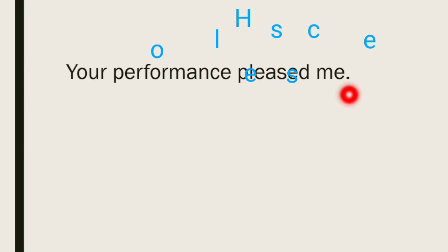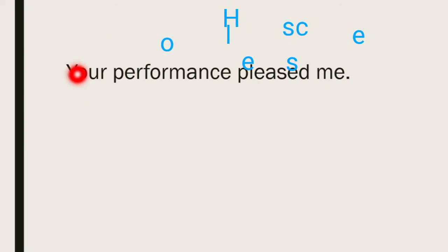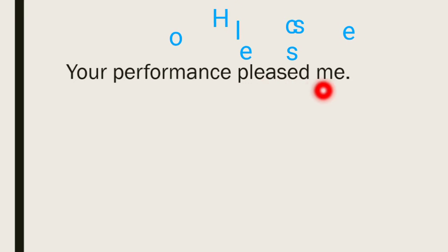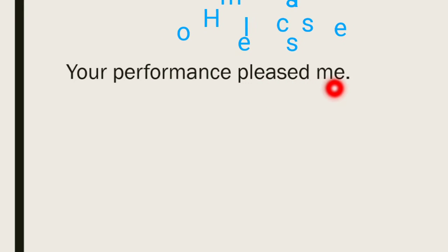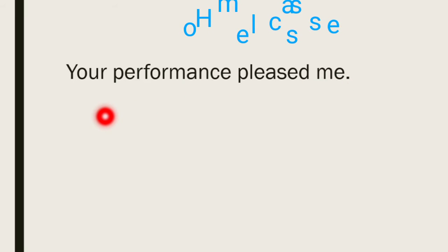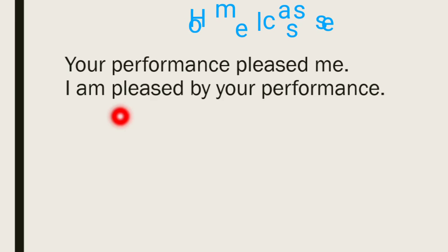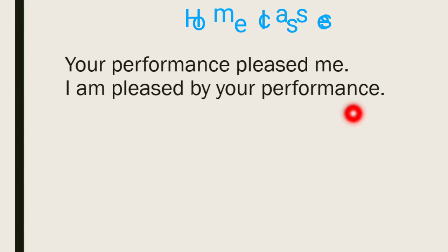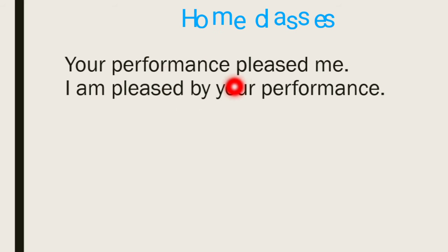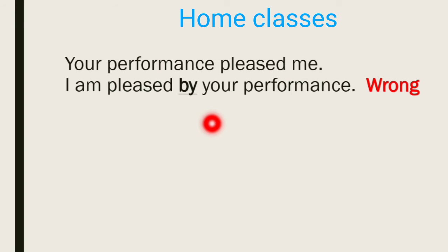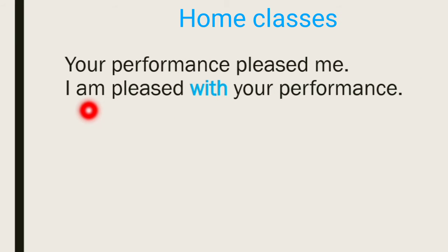The next sentence: 'Your performance pleased me.' 'Your performance' is the subject, 'pleased' is the verb, and 'me' is the object. When 'me' changes from object to subject, it becomes 'I.' So the passive becomes: 'I am pleased by your performance.' But 'by' is not appropriate here. When the word 'pleased' is used, we cannot use 'by.' If you write 'I am pleased by your performance,' that is a wrong sentence. In place of 'by,' we will use 'with.' The correct sentence is: 'I am pleased with your performance.'